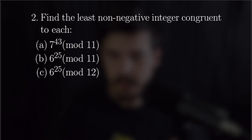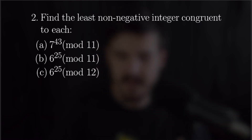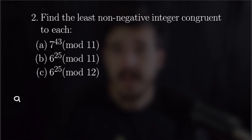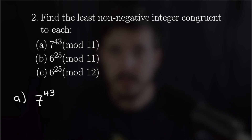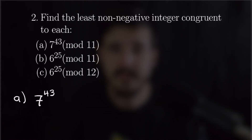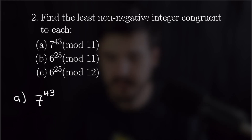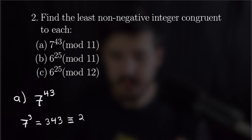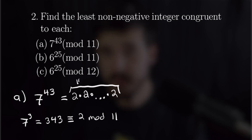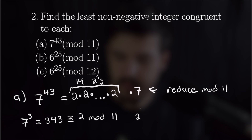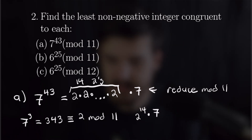For our second example we're finding the least non-negative integer congruent to each of these: 7 to the 43rd mod 11, 6 to the 25th mod 11, and 6 to the 25th mod 12. For part a, I like to look at the first few powers of the base for an easy reduction. 7 cubed is 343, which is just 2 more than 341, a multiple of 11. So we rewrite 7 to the 43rd as 14 copies of 7 cubed times one extra 7, giving us 2 to the 14th times 7.